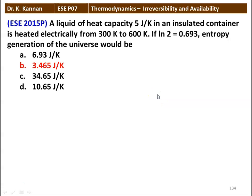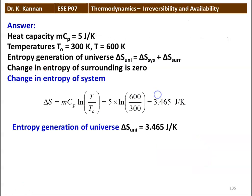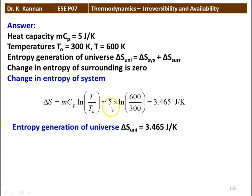The answer is 3.465 joules per Kelvin. Here is the solution: heat capacity MCP equals 5 joules per Kelvin, T0 equals 300 Kelvin, T equals 600 Kelvin. Entropy generation of the universe: delta S universe equals delta S system plus delta S surrounding. The change in entropy of the surrounding is 0 as the system is insulated. Delta S system equals MCP times ln(T/T0) equals 5 times ln(600/300) equals 3.465 joules per Kelvin.